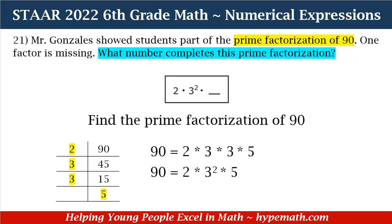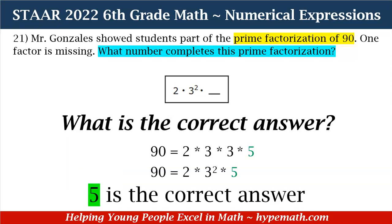Using the ladder method, we start with 2 because we know it's part of the given example. 90 divided by 2 equals 45. Then 3 divided into 45 equals 15. The two prime factors of 15 are 3 and 5. So the prime factorization of 90 is 2 times 3 times 3 times 5, or 2 times 3 squared times 5. The correct answer is 5 — that is the missing number in the prime factorization.